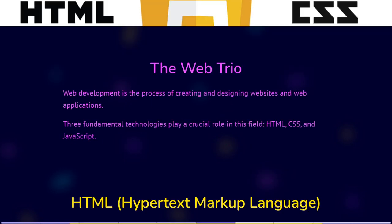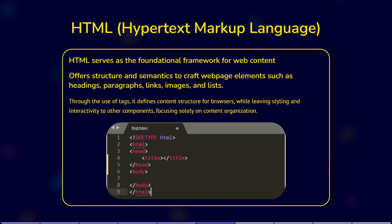HTML — Hypertext Markup Language — is the backbone of web content. It provides the structure and semantics for creating the elements that make up a web page. These elements include headings, paragraphs, links, images, lists, and more. HTML uses tags to define the structure of content, making it easier for browsers to understand how to display the information. HTML is not concerned with styling or interactivity; its primary role is to organize and arrange content on a web page.